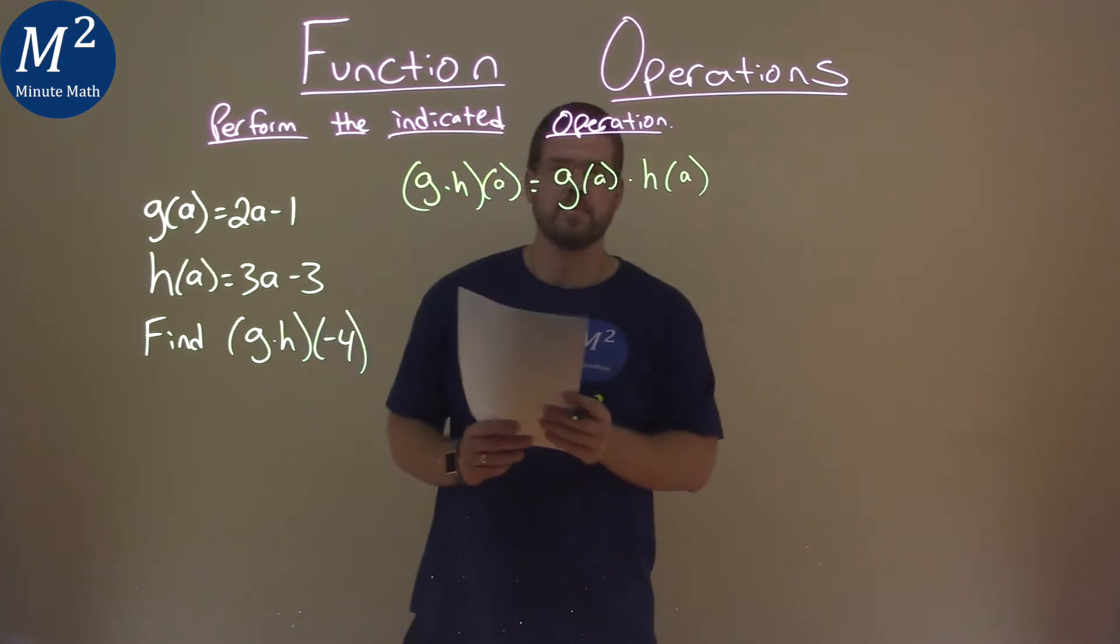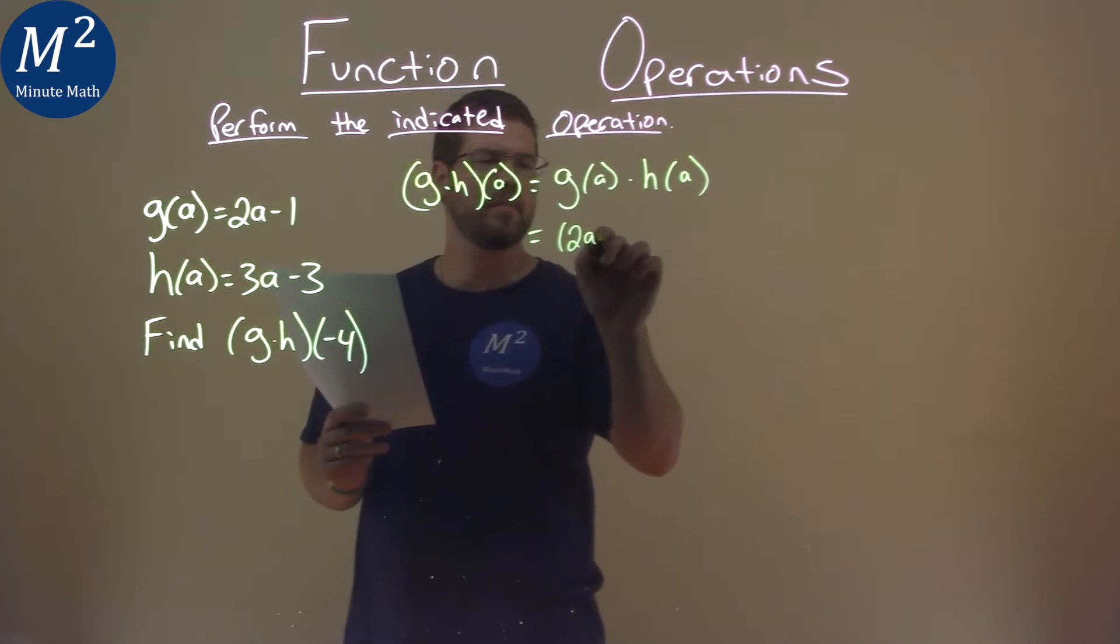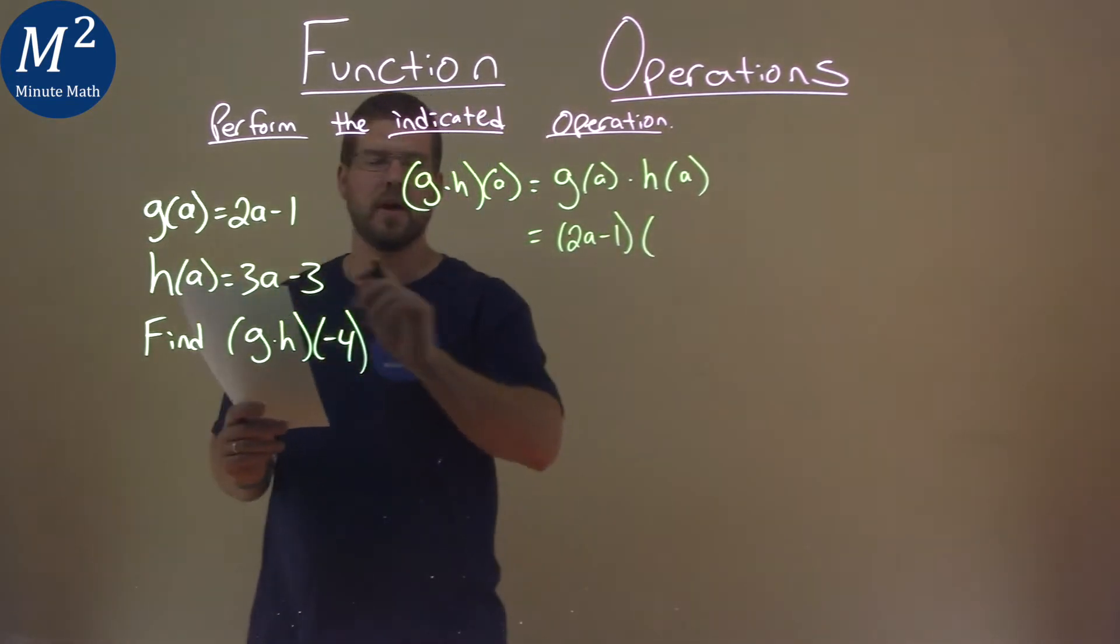So now we can simplify that. What's g of a? Well, 2a minus 1. h of a is 3a minus 3.